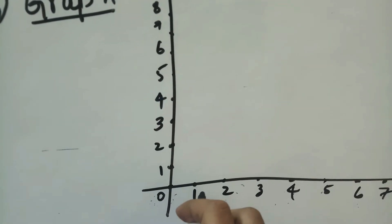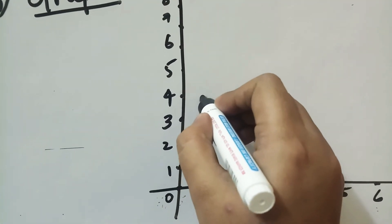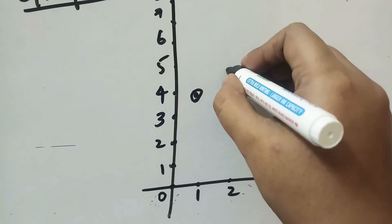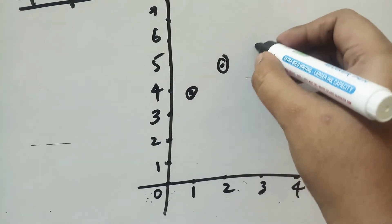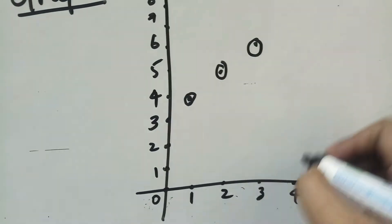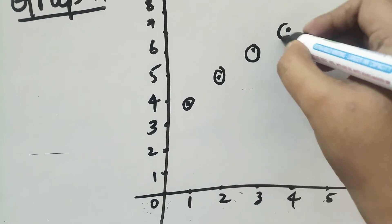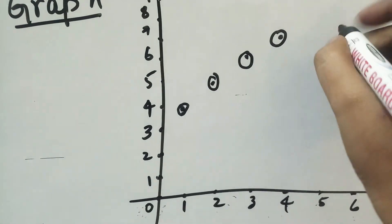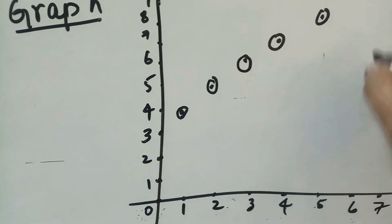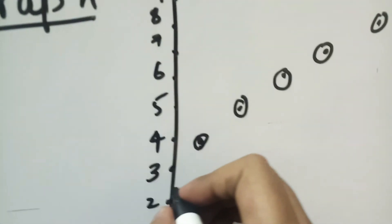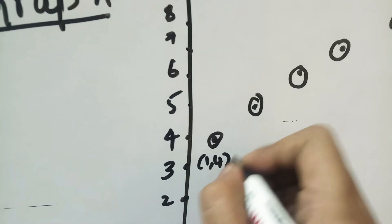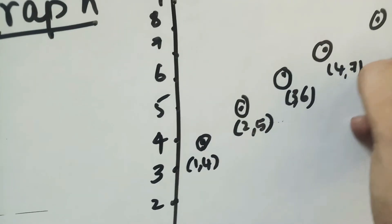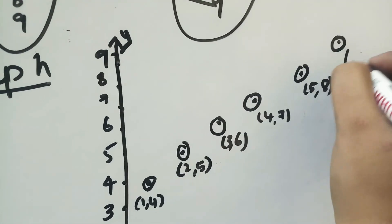First is (1,4), x order value 1, y order value 4, and (2,5), x order 2, y order 5, (3,6), (4,7), (5,8), (6,9). So 1,4, 2,5, 3,6, 4,7, 5,8, 6,9.